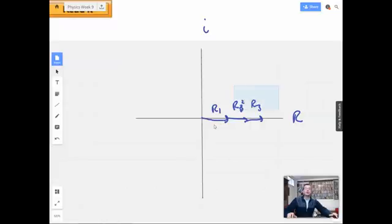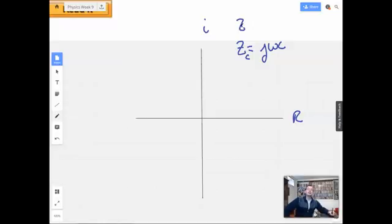Well, when you start throwing inductors and capacitors in the mix, the way you look at them is I'm going to use Z for impedance, which is basically resistance. So for a capacitor, I'm going to call it J omega C. And for an inductor, I'm going to call it one over J omega C.